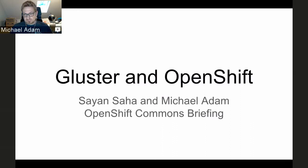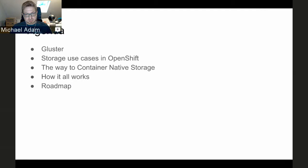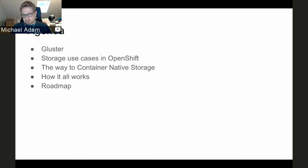This is the rough agenda. I'm going to talk about what GlusterFS actually is, briefly cover storage use cases in OpenShift, then describe container native storage and how it works. Finally there's a roadmap section. Inside the 'how it works' section we have two demos, but if we don't have time they're recorded and available on YouTube. Questions are encouraged whenever something is unclear.